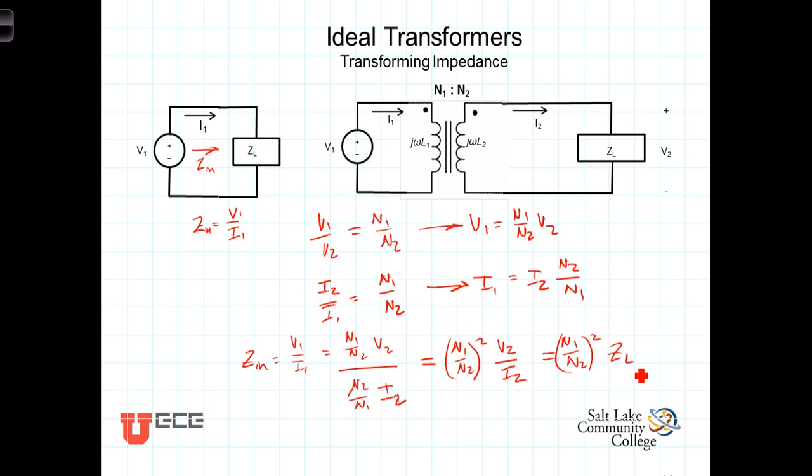So, up here, without the transformer, the source saw the load impedance Z sub L. By inserting the transformer, the source sees, as Z in, it sees not Z sub L, but Z sub L multiplied by the ratio of the turns in the primary divided by the turns in the secondary squared.